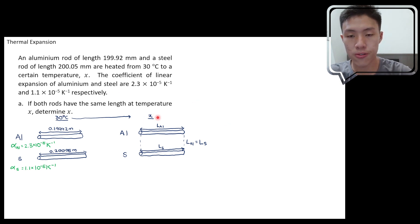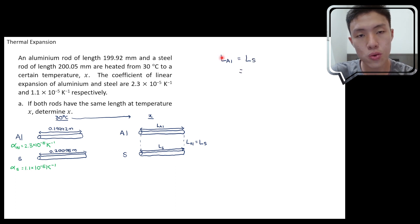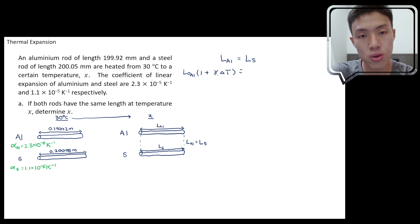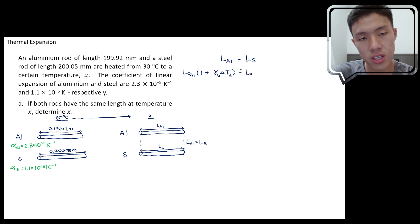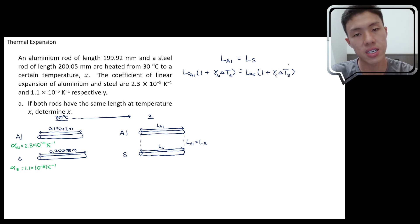To find temperature x, we set the new length of the aluminium rod equal to the new length of the steel rod. The new length of the aluminium rod is: original length of Al × (1 + alpha_Al × ΔT). The new length of the steel rod is: original length of steel × (1 + alpha_S × ΔT), where the subscripts denote aluminium and steel respectively.